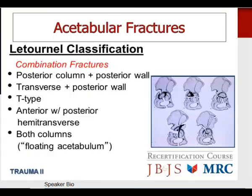The five associated fractures include posterior column with posterior wall; transverse with posterior wall, the most common combination fracture; and the T-type fracture, which has the hallmark of a vertical fracture line extending into the obturator ring. The posterior and anterior columns are dissociated from one another, meaning a single anterior or posterior approach is usually not sufficient. The T-type fracture has the worst prognosis in all published series, primarily due to this column dissociation.